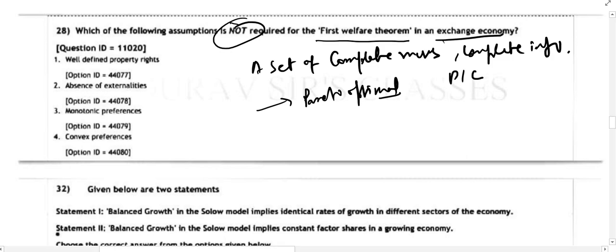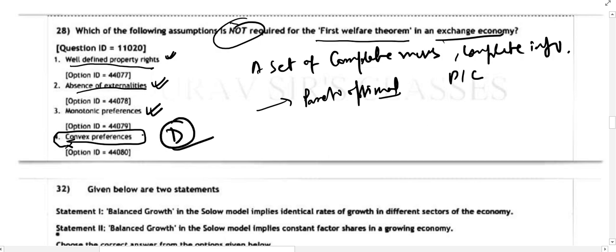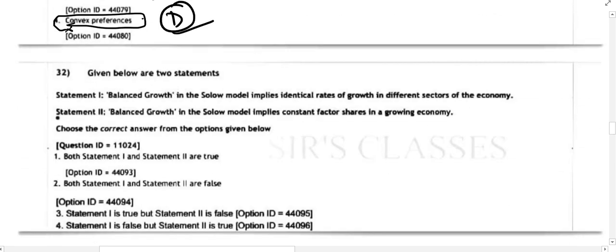Proceeding with the options: well-defined property rights — very much required. Absence of externality — yes, required. Monotonic preferences — yes, required. Convex preferences — no, convex preferences are not required. The First Welfare Theorem can be reached without convex preferences. So the correct answer for question 28 is option D.